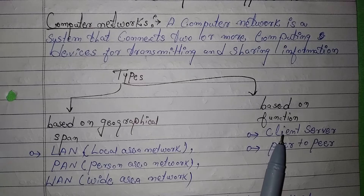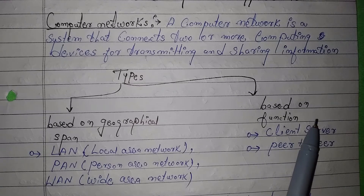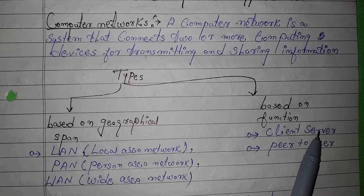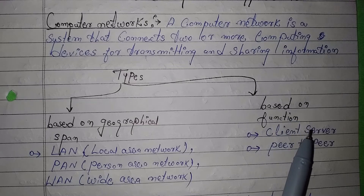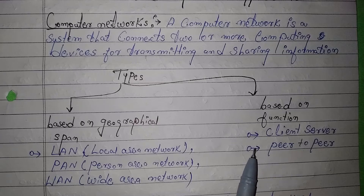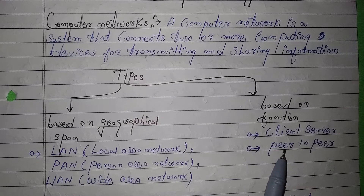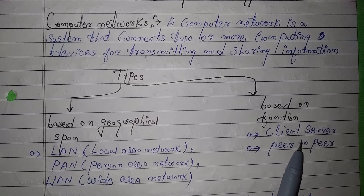Based on function, there are two types: Client-Server and Peer-to-Peer. Client-Server means there is a central computer which acts as a server, and some computers are connected with it. These computers connect to the server and obtain information from it. In Peer-to-Peer, every computer works equally with the others.